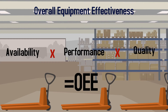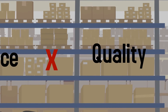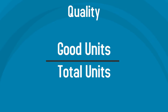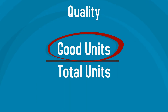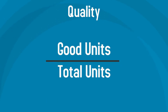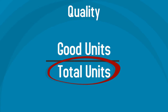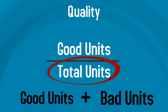In this video, we will focus on the last component of OEE, which is quality. The quality factor can be calculated by dividing the number of good units by the number of total units. Good units are units completed the first time without any additional work, while total units are the sum of good and bad units. Bad units are pieces that require rework or must be scrapped completely.